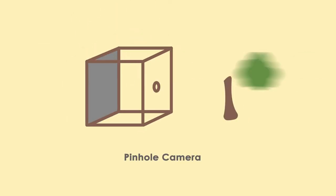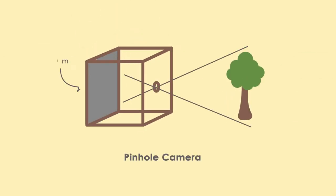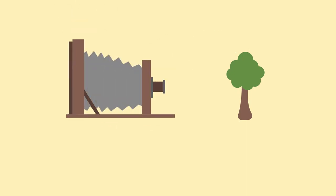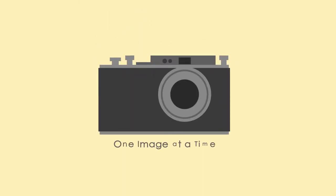Cameras were created in the 19th century by utilizing glass to focus light onto a chemically treated surface. As technology improved, glass got better and the chemically treated surfaces were improved. By the early 20th century, cameras had become somewhat standardized.